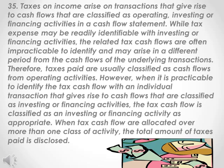However, when it is practicable to identify the tax cash flow with an individual transaction that gives rise to cash flows that are classified as investing or financing activities, the tax cash flow is classified as an investing or financing activity as appropriate. When tax cash flows are allocated over more than one class of activity, the total amount of taxes paid is disclosed.